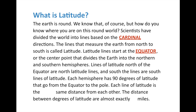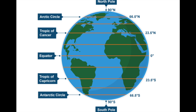So the north pole and equator has 90 degrees of latitude — south pole, same thing. The important thing to know about lines of latitude is they are the exact same distance from each other. The distance between degrees of latitude is almost exactly 69 miles. So every 69 miles up from the equator we have one degree of latitude, and those lines are divided into minutes and seconds. But for our purposes in sixth grade, we're not going to cover that.